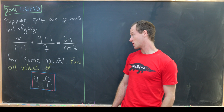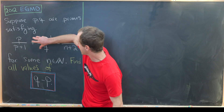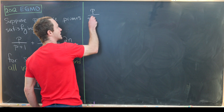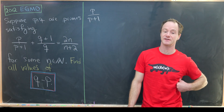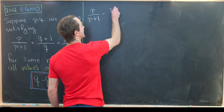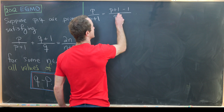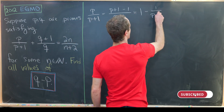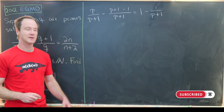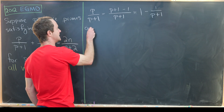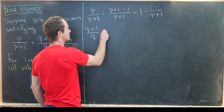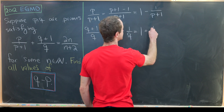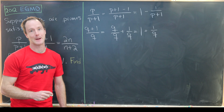We'll start with a little simplification to make these three terms easier to work with. We can take p/(p+1) and write it as (p+1−1)/(p+1) = 1 − 1/(p+1). Similarly, (q+1)/q = q/q + 1/q = 1 + 1/q.